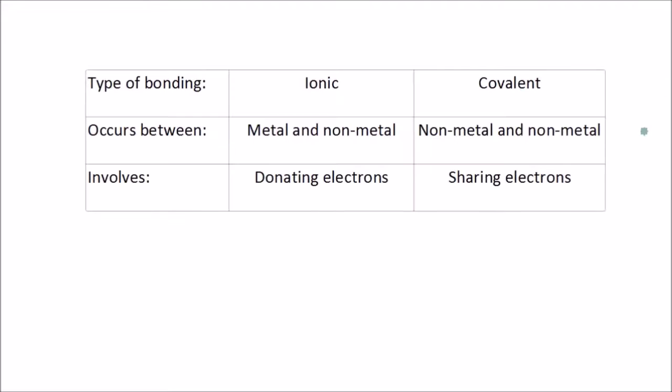Hello and welcome to Get to Know Science. This video is about covalent bonding. There are two types of bonding: ionic and covalent. Ionic bonding was covered in a previous video and it involves a metal atom donating one or more electrons to a non-metal atom. Covalent bonding, on the other hand, occurs between a non-metal and a non-metal and involves the sharing of electrons, thereby forming a strong bond.